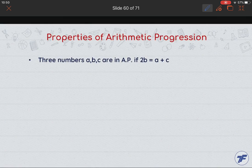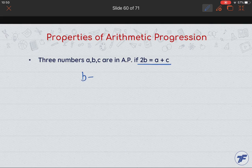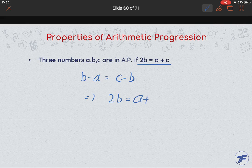Property 3: if three numbers a, b, c are in AP, then 2b = a + c. We've already discussed this — the condition b − a = c − b means 2b will be equal to a + c.